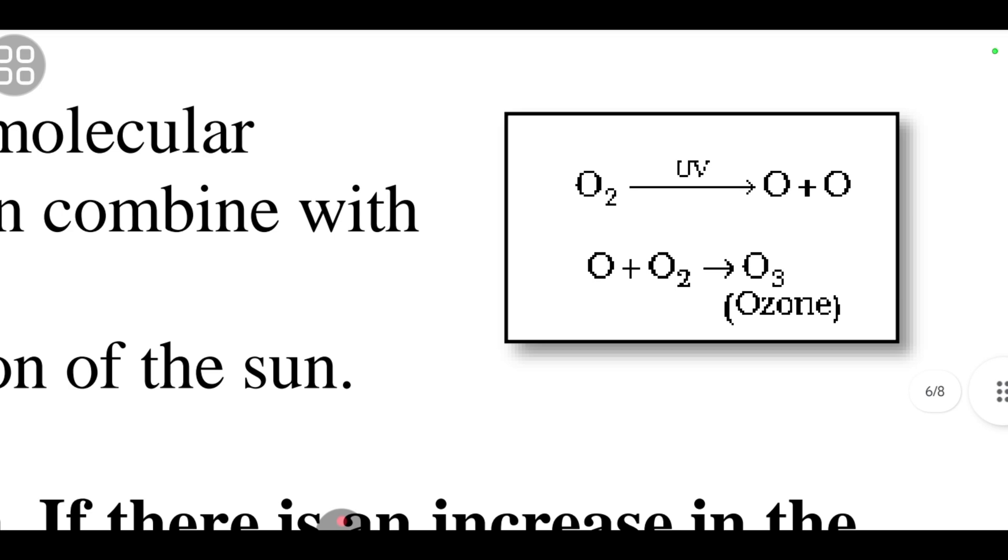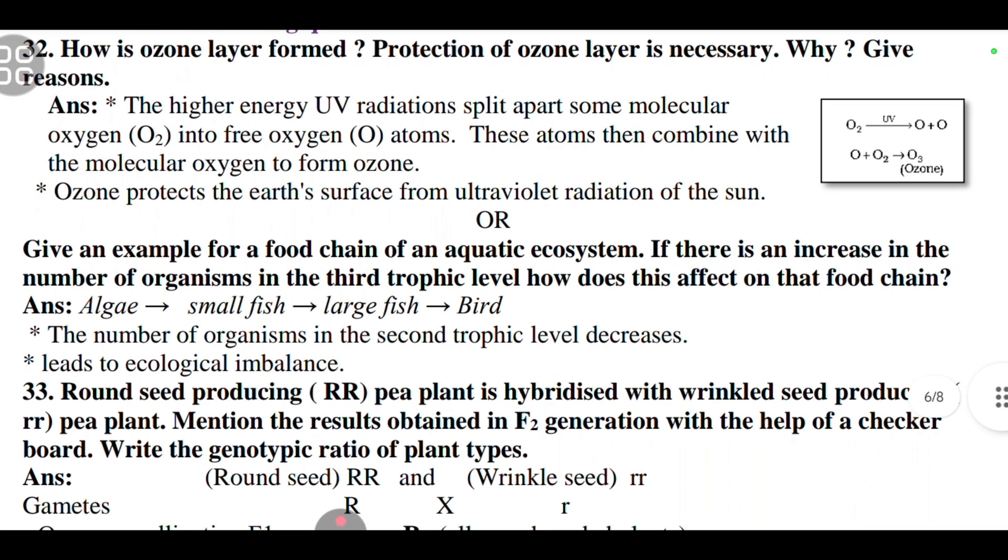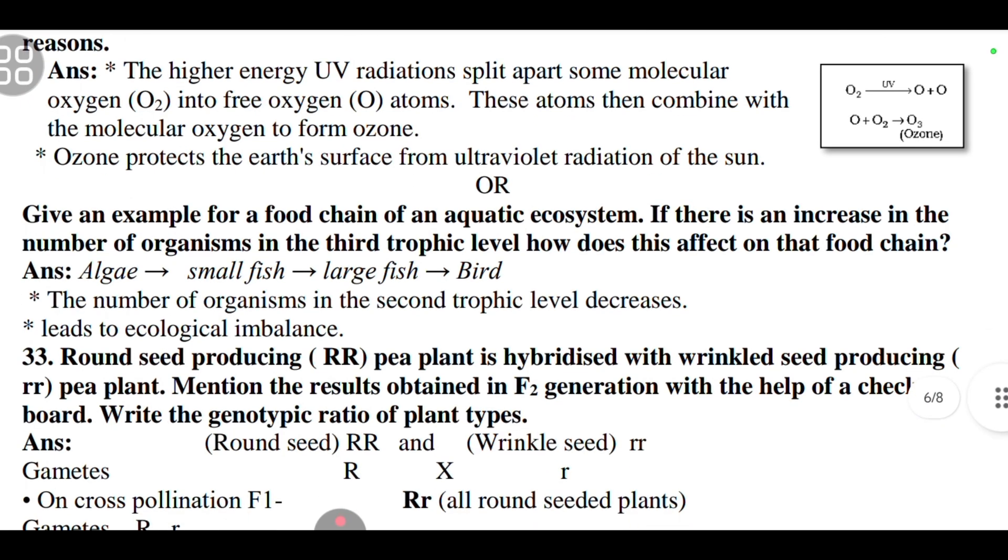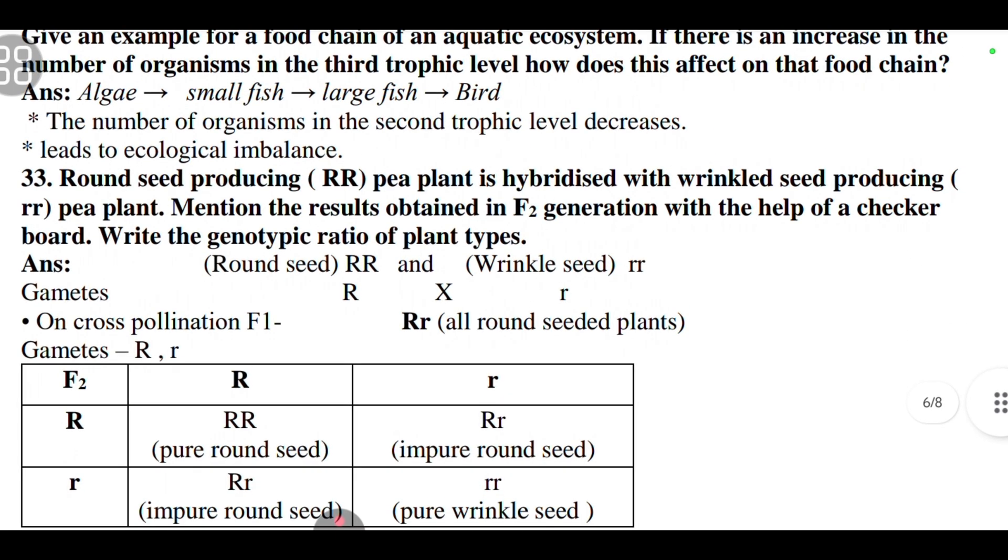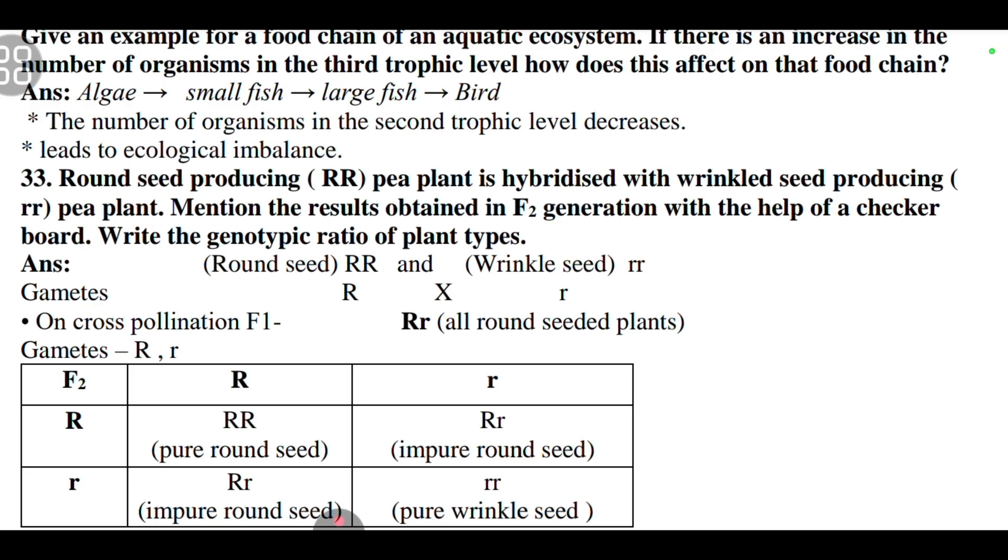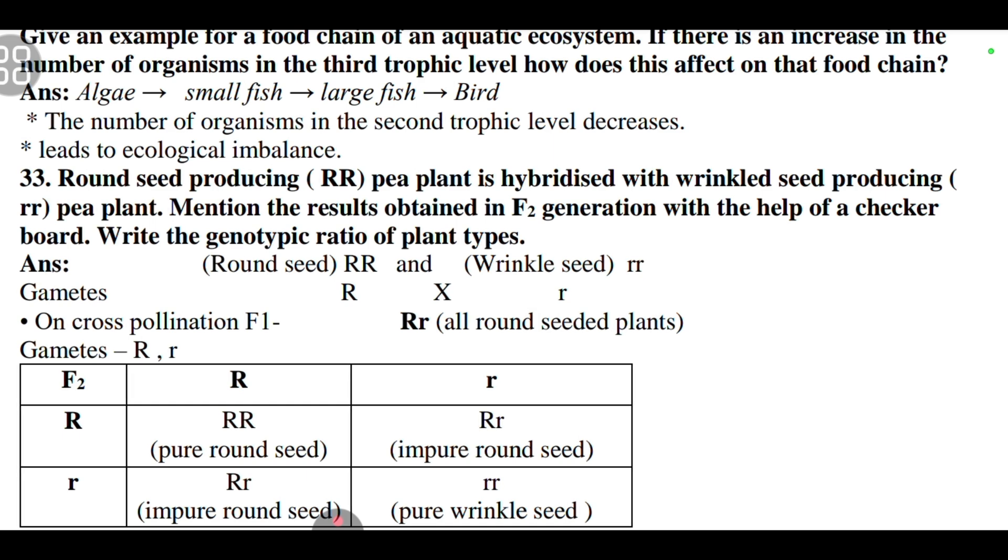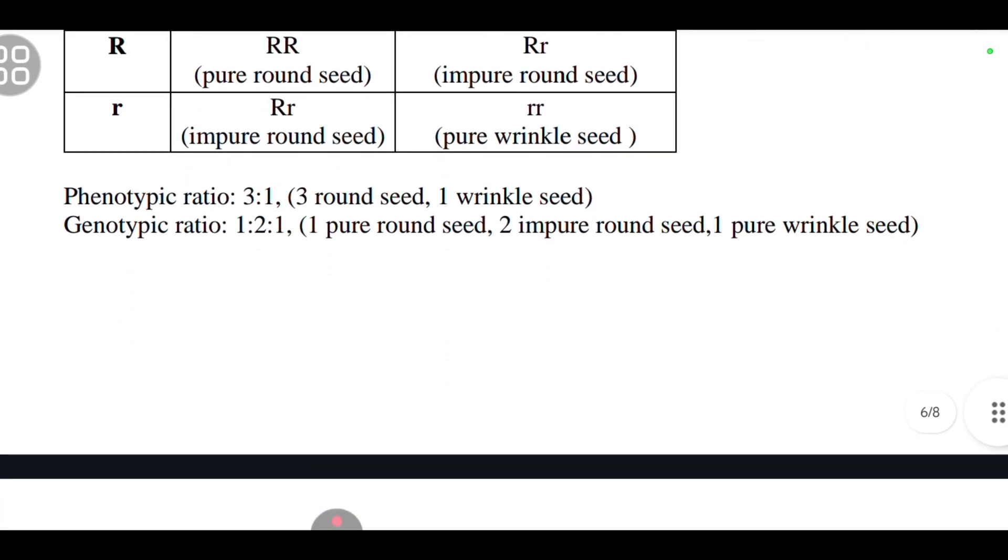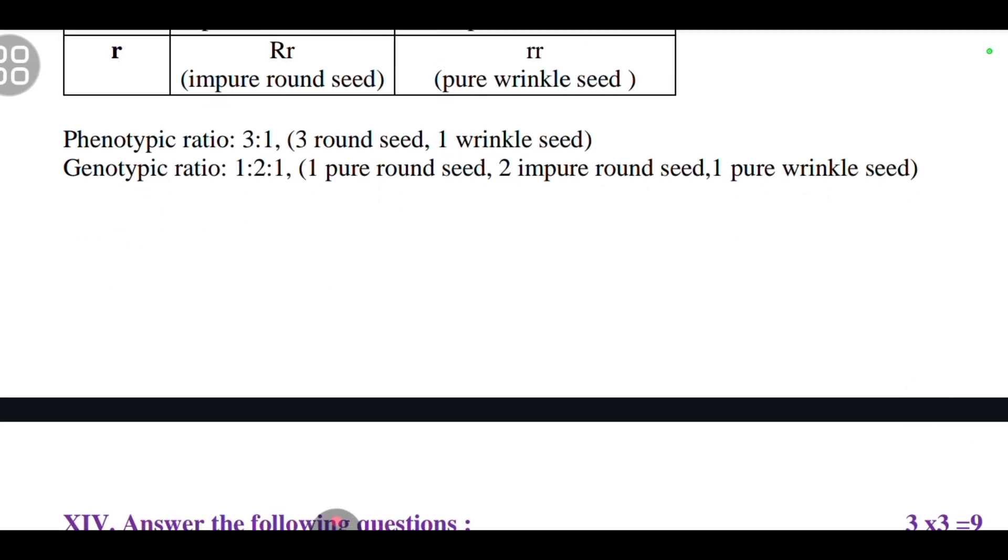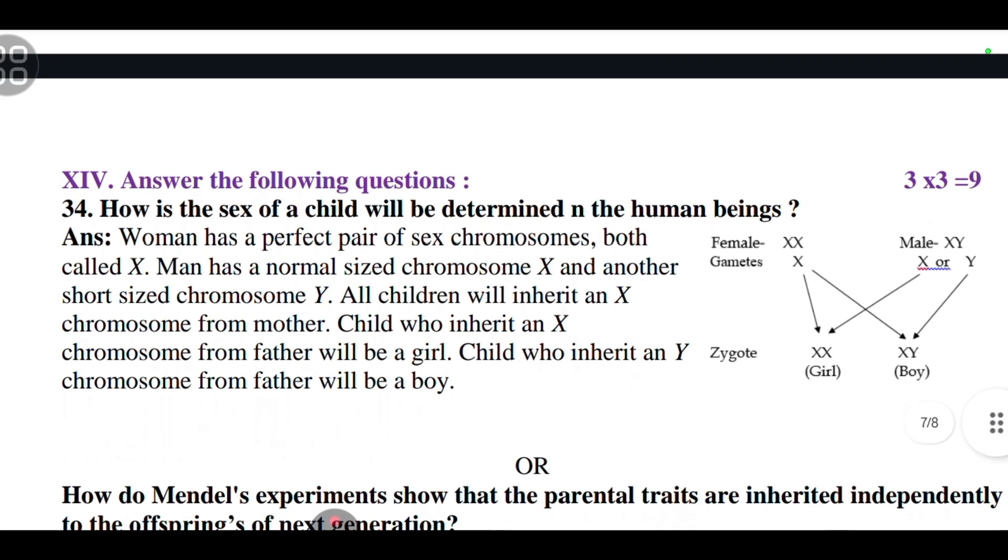The 30th question: asexual reproduction gives more variation. Why answer? Because gametes come from two different and sexually distinct individuals. Formation of gametes involves meiosis. The 31st question is: use of non-biodegradable substances should be minimized. Why? This is the answer. Coming to 12th main, answer the following questions. How is ozone layer formed? Protection of ozone layer is necessary. Give two reasons.